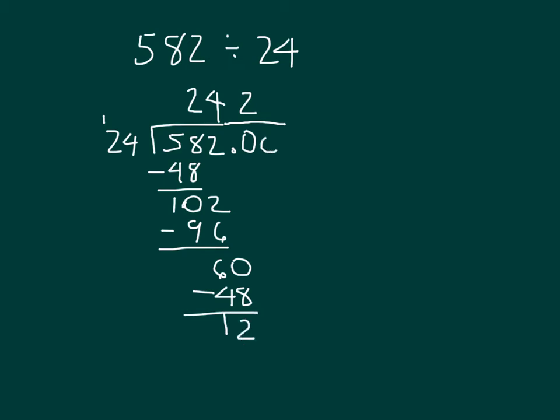60 minus 48 is 12. I'll add another 0 in my dividend after that decimal point. And then so it's still the value is 582, just as before.